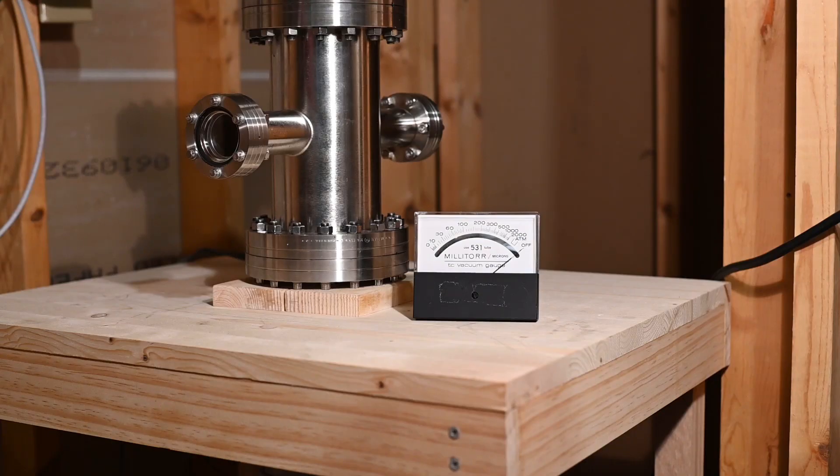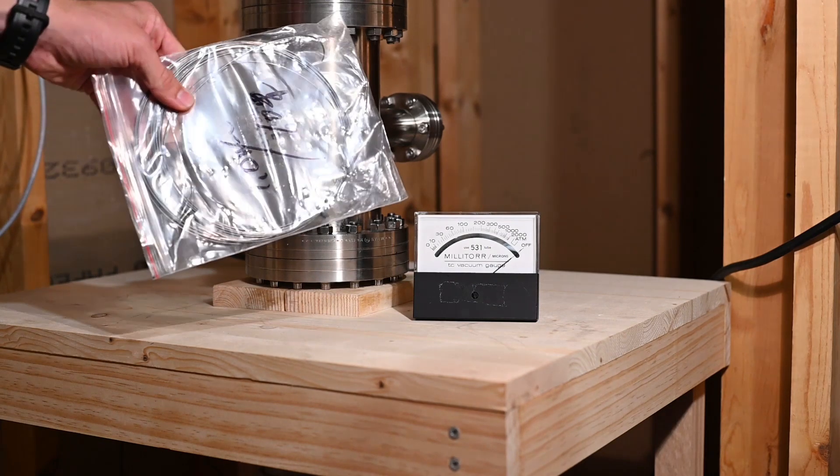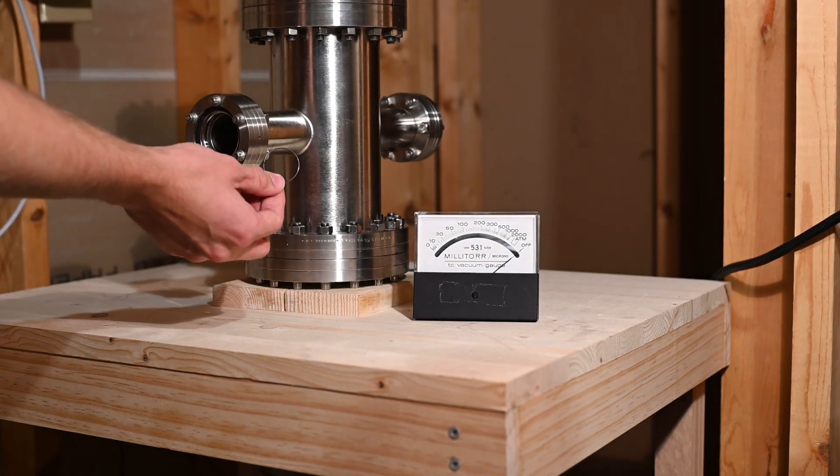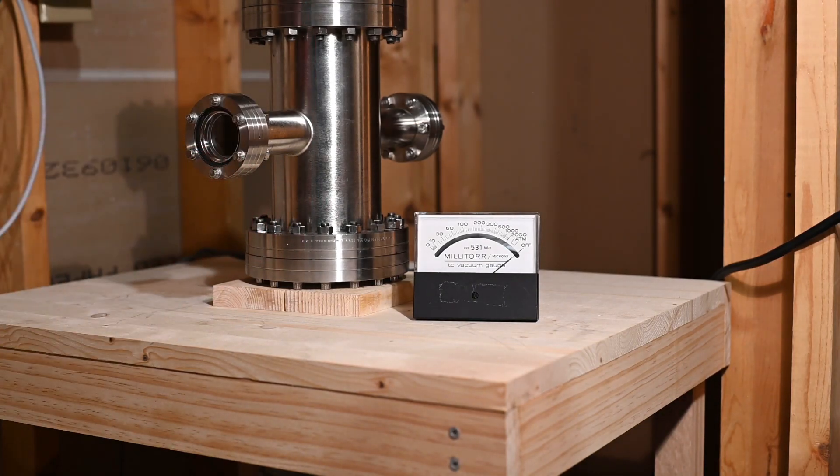There's still a lot of things that need to happen before this Fusor is actually operational and the first thing on my list is the construction of the inner grid. I've been working on turning this one millimeter tungsten wire into small rings which I'll use to construct the grid. It's a little bit hard to find time as I'm currently a college student.